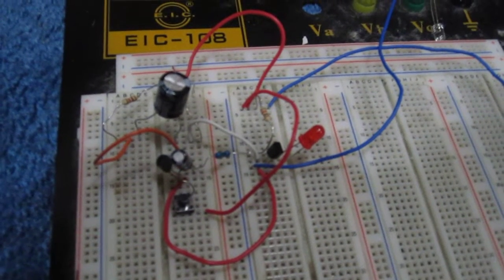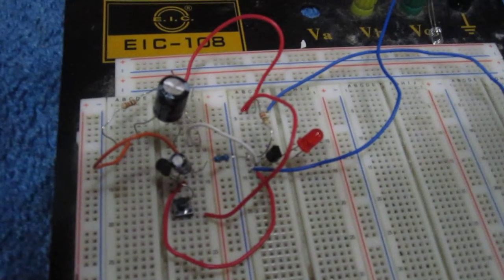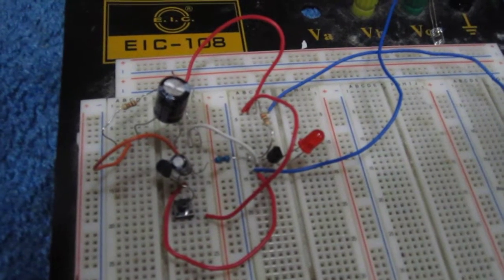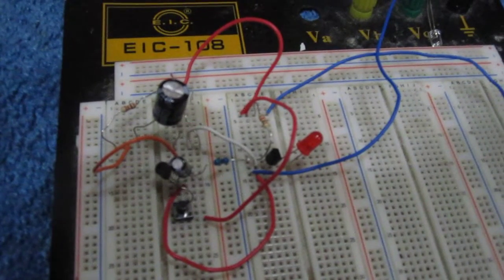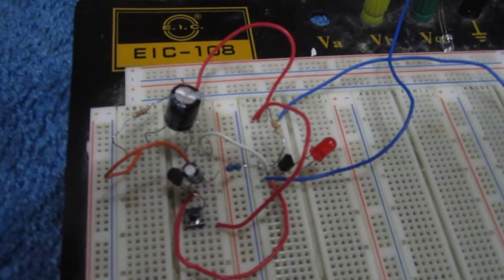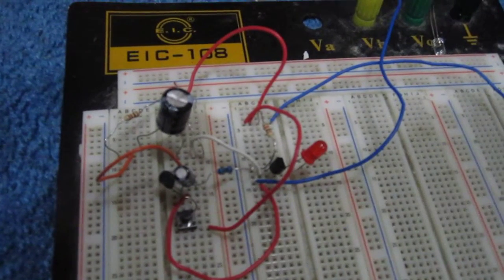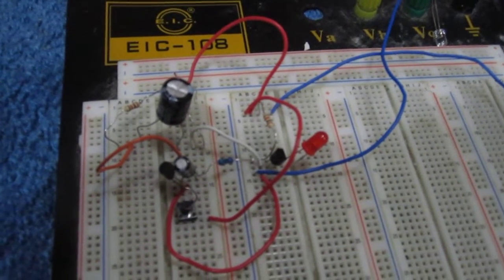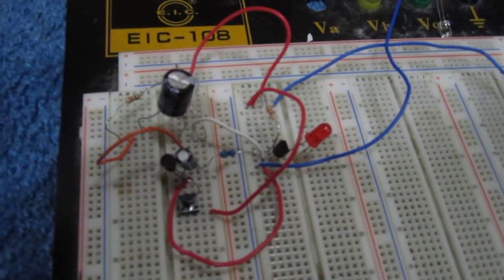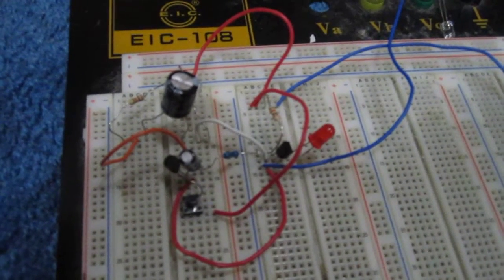Hey guys, this is a monostable multi-vibrator circuit built using two NPN transistors. Specifically in this circuit I'm using 2N4401 NPN transistors, but you can really use any general purpose NPN transistors. They should work just fine.